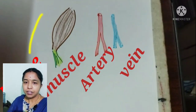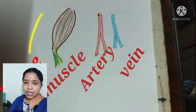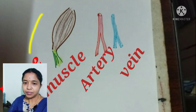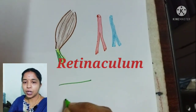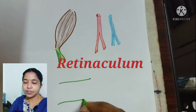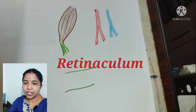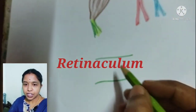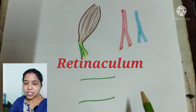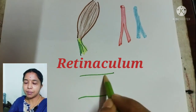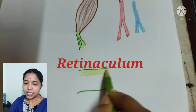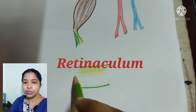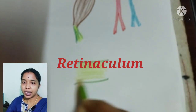For the nerve, it is a cord-like firm structure, so it's a single line, yellow in color. For the ligaments and retinacula — such as the inguinal ligament, iliofemoral ligament, flexor retinaculum, and extensor retinaculum — we are using the light green color to draw the ligaments.